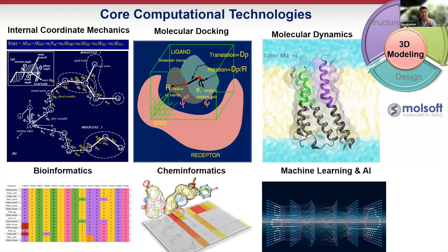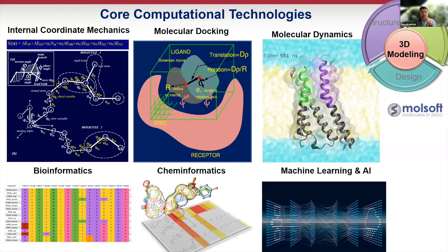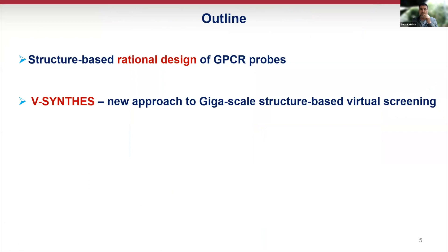Other important building blocks very conveniently incorporated in ICM are bioinformatics, cheminformatics, and now machine learning. We apply this to rational design and screening, and I will have two parts showing some examples of this.